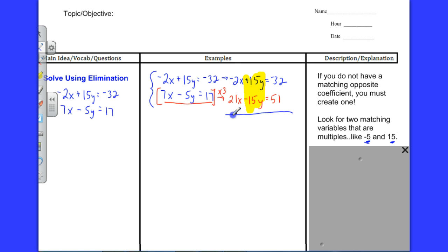Watch what happens. We add straight down. Negative two x plus twenty-one gives me nineteen x. There's zero of those, they just cancelled out. Then you've got negative thirty-two plus fifty-one, that's nineteen. Well, that worked out really nice. So divide by nineteen, solve that, and you get x equals one. How nice.